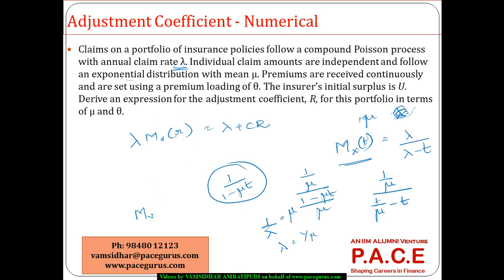So the MGF evaluated at r gives M_X(r) = 1/(1 minus mu*r). Premiums are received continuously and are set using a premium loading of theta. With mean individual claim amount mu and loading factor (1 + theta), the premium rate c equals mu times (1 + theta) times lambda.